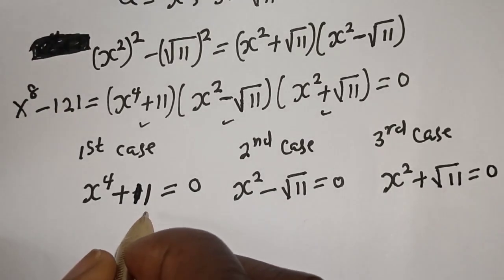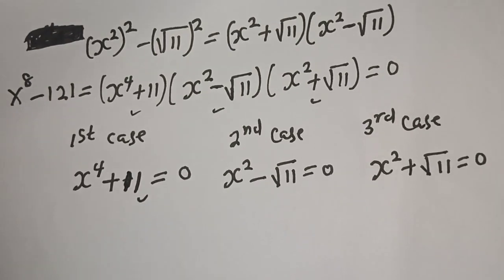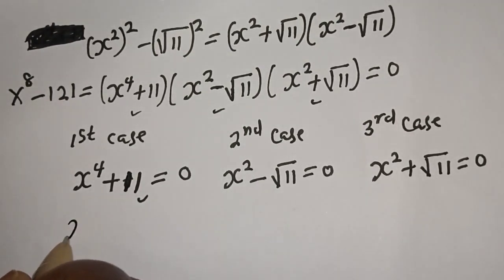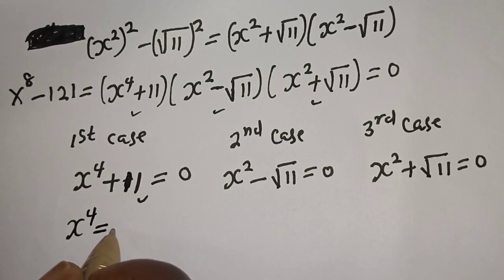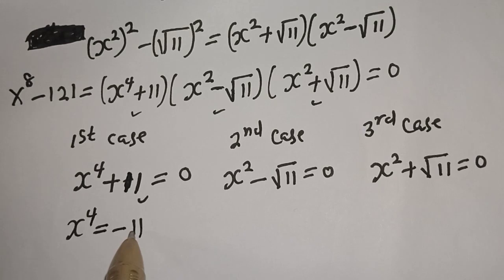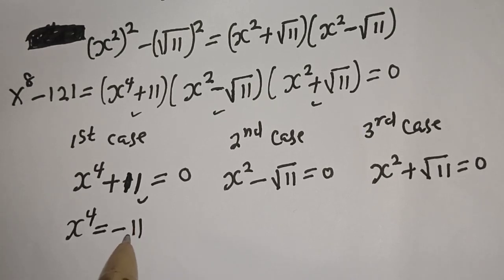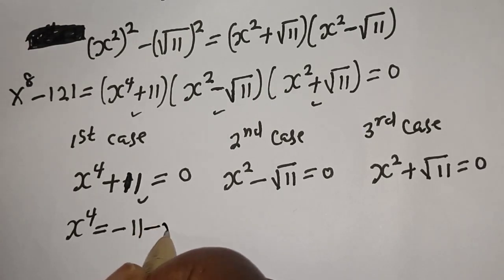From the first case, s raised to power 4 is equal to minus 11. But we know that s raised to power 4 cannot be equal to minus 11. This is not a true statement, so this case is rejected.